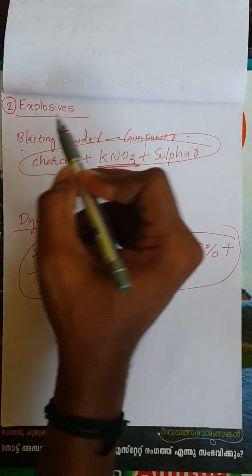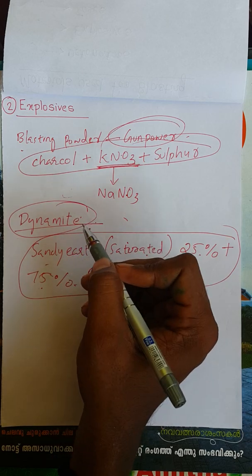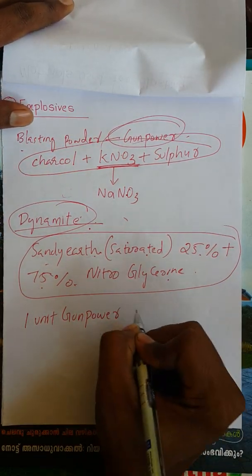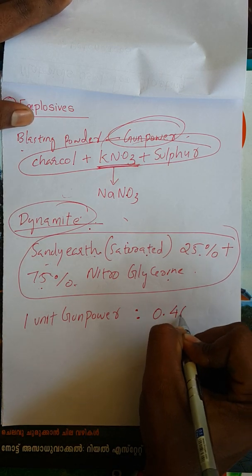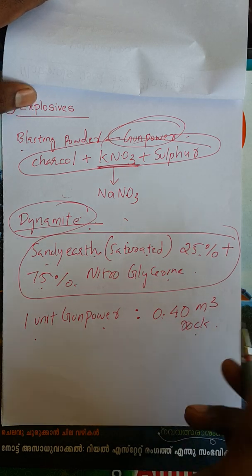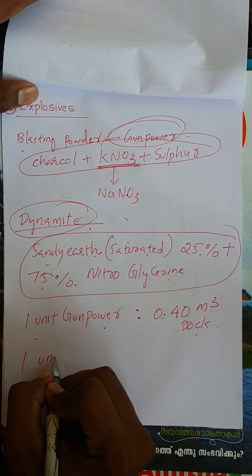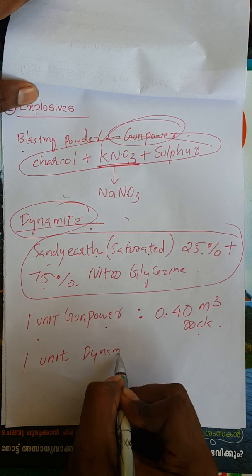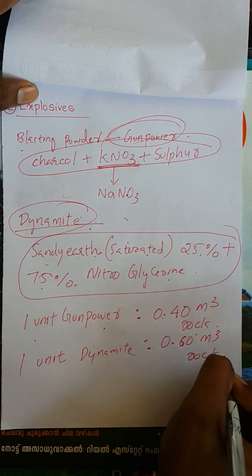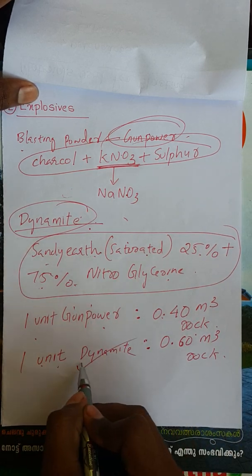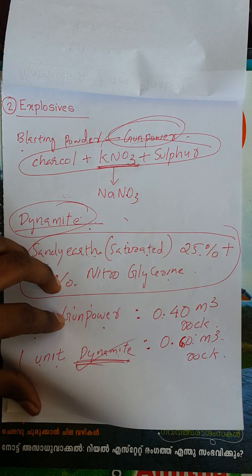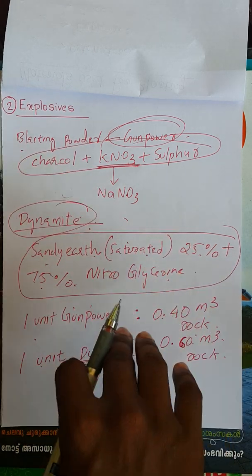For comparison of gunpowder to dynamite: one unit of gunpowder blasts 0.40 cubic meters of rock, while one unit of dynamite blasts 0.60 cubic meters of rock. Dynamite has greater shattering power.